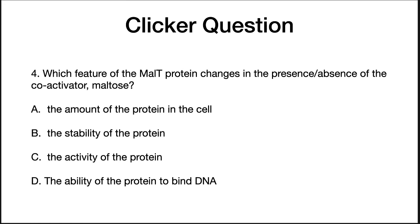Another question — there are going to be lots of questions in these lectures to make sure you get this. Which feature of the malt protein changes in the presence or absence of the co-activator maltose? The answer is D: the ability of the protein to bind DNA. Binding of maltose to malt causes a conformational change in the protein, which enables it to bind to its site on the DNA and recruit RNA polymerase.